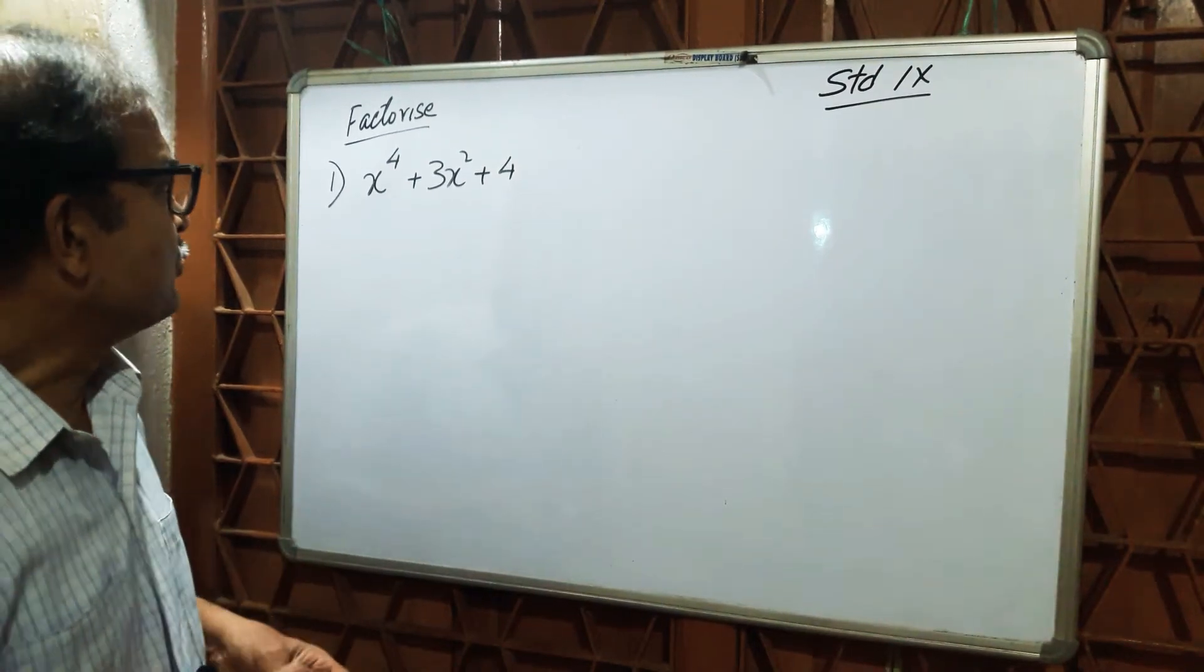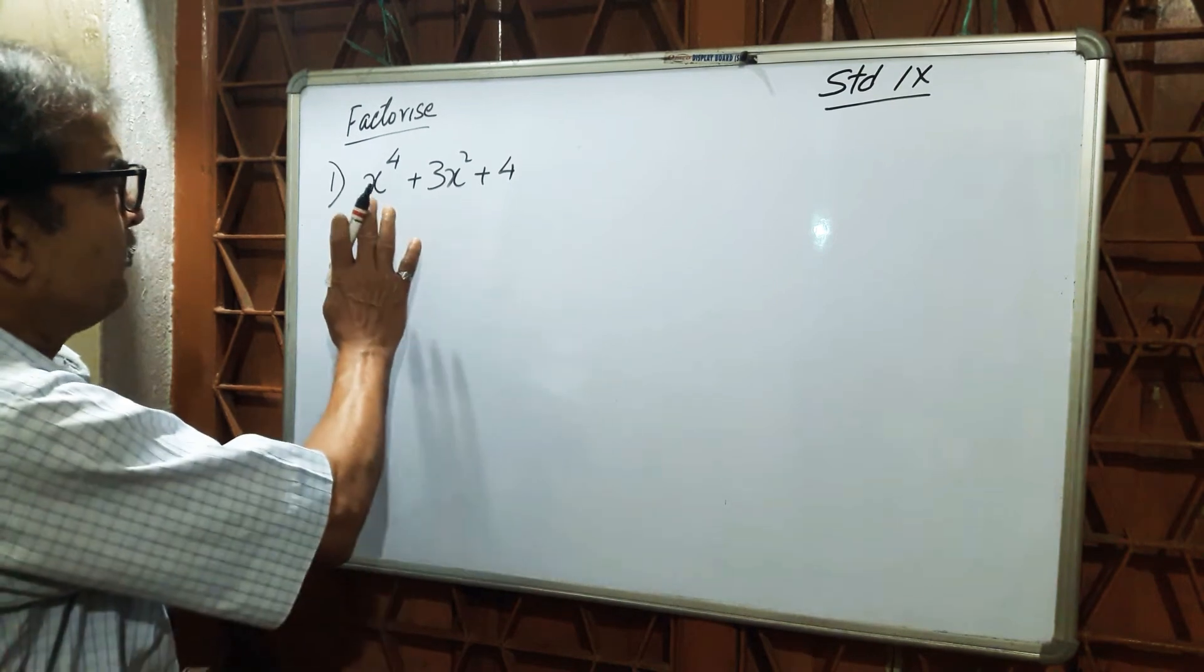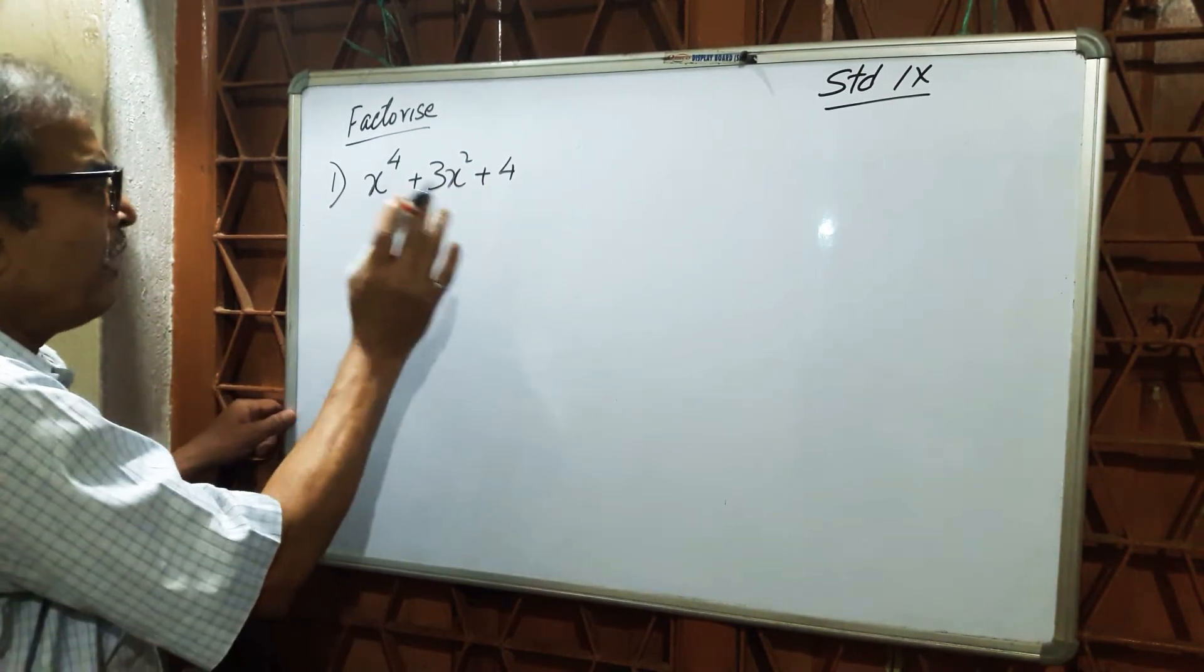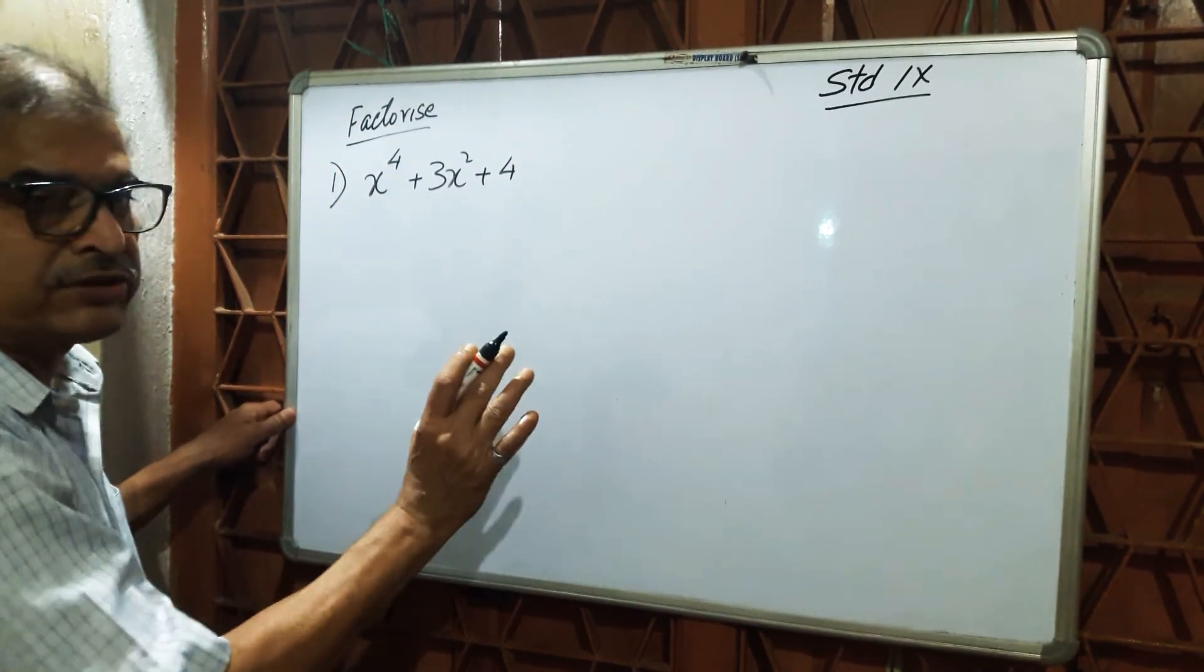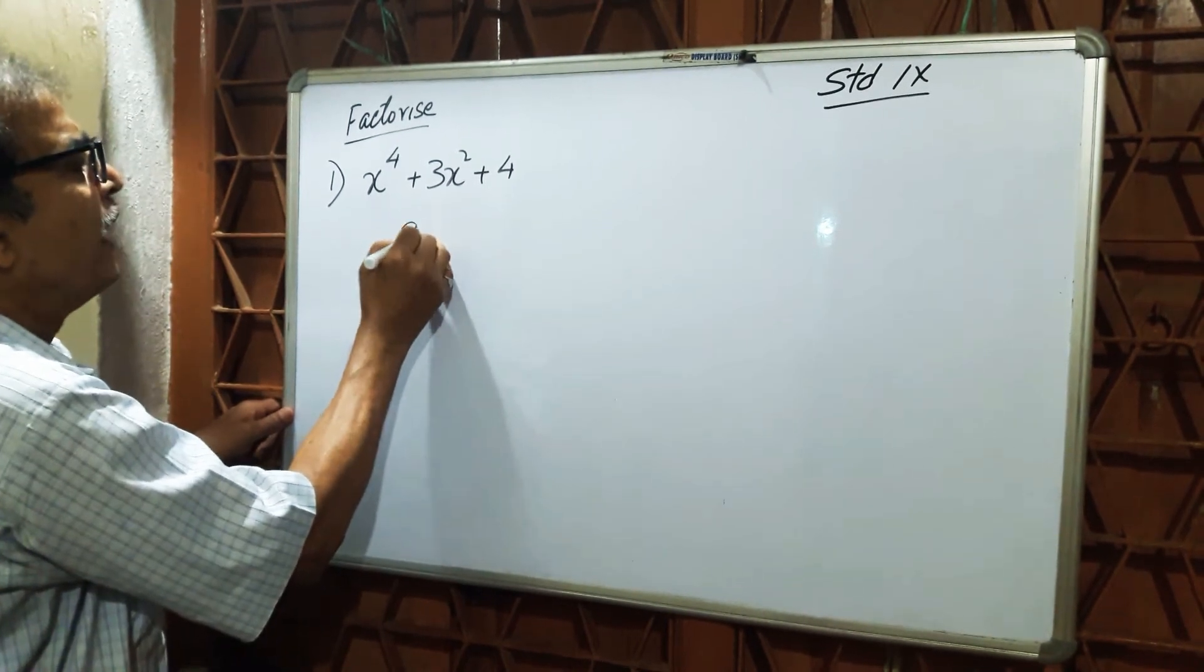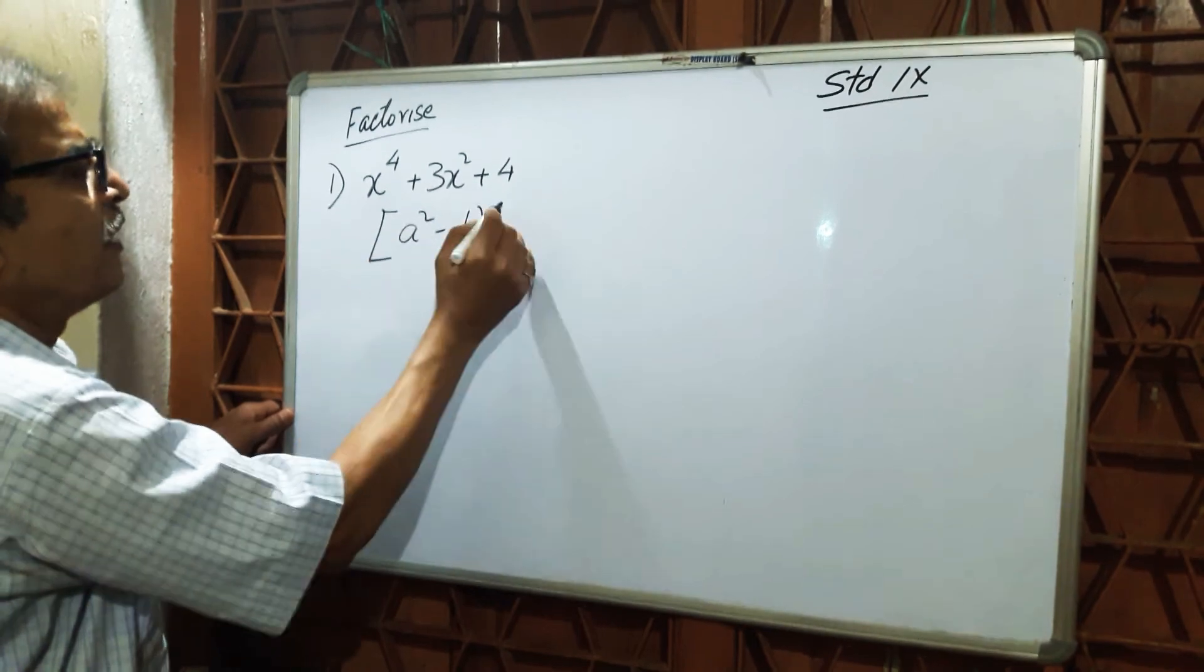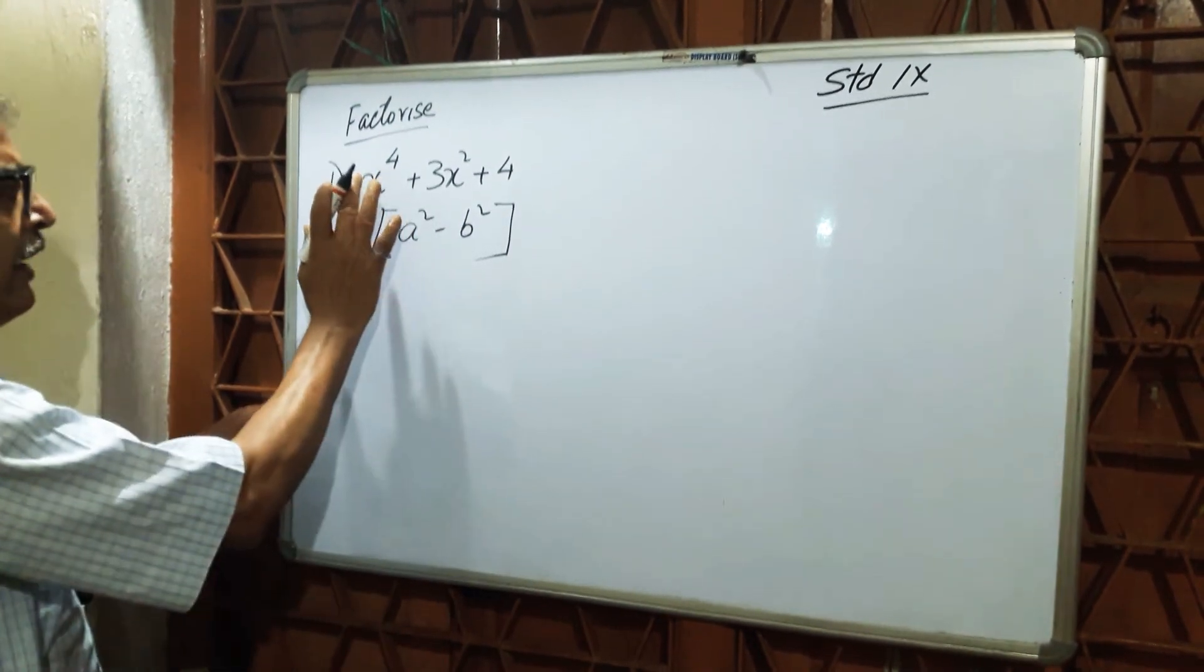Viewers, this question is based on factorization. Your question is given: x to the power 4 plus 3x squared plus 4. You have to add something and subtract something in such a way it should be in the form of a squared minus b squared.